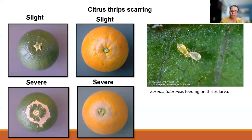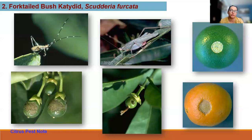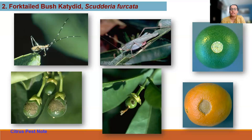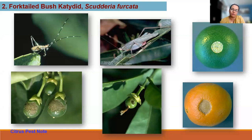Another insect causing surface damage is the forktail bush katydid. If you see a green fruit with a very circular, slightly sunken scar, that's damage caused by katydids. They love to feed on young fruit in spring — they have only one generation per year. They take a chunk out of several fruits rather than finishing one. The fruit grows around the wound, leaving a circular scar. Again, this is only surface damage and does not affect fruit quality at all.